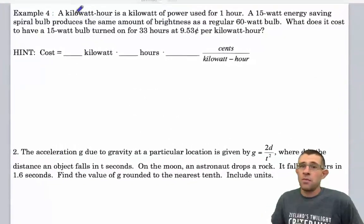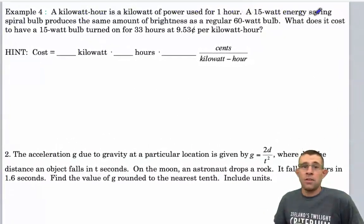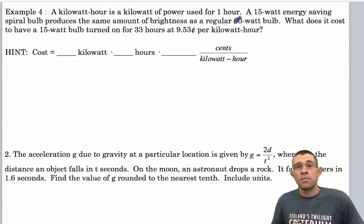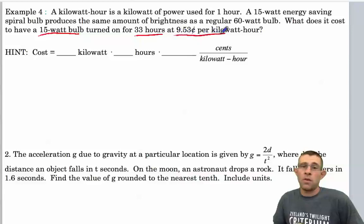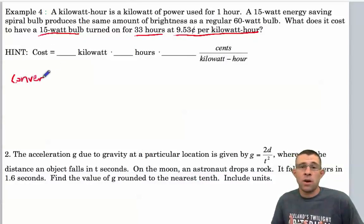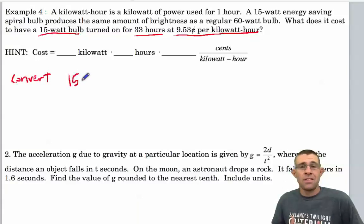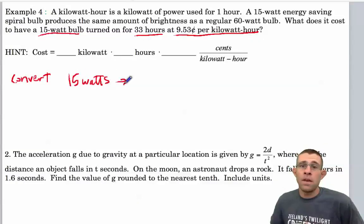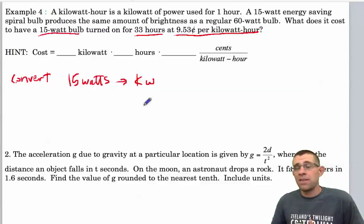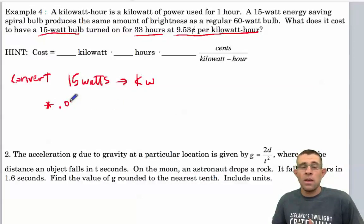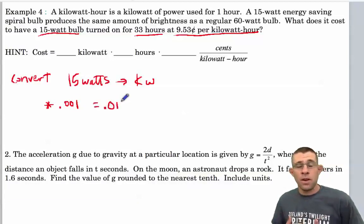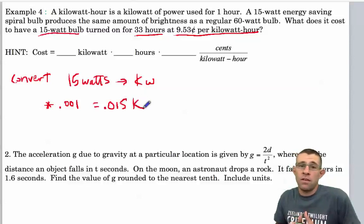All right. In our next example, we're asked to find out the cost of running a 15 watt bulb for 33 hours at 9.53 cents per kilowatt hours. Well, our first task really should be to convert watts, 15 watts, to kilowatts. And since there's 1,000 watts in 1 kilowatt, I know that I can multiply 15 times 0.001 in order to get the number of kilowatts in 15 watts. When I do that, I get 0.015 kilowatts.